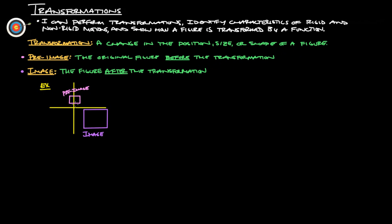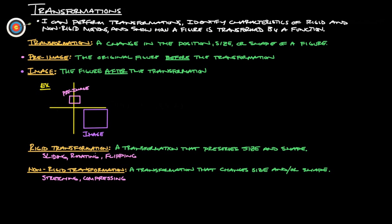So in this case, we started with the pink pre-image, and we transformed it into this image here. There are two types of transformation. There's a rigid transformation, that's a transformation that preserves the size and the shape. So if we started with this little pink rectangle here, we would have that same size and shape pink rectangle somewhere else in here. That's a rigid transformation. You can do that by sliding, rotating, and flipping. A non-rigid transformation is a transformation that changes the size and or shape. We can do that by stretching or compressing. This image here is an example of a non-rigid transformation of this pre-image.